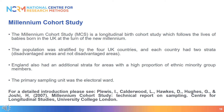For example, the Millennium Cohort Study is one of our valuable birth cohort study resources. This survey follows the lives of babies born in the UK between the years 2000 and 2002, and has a complex sample design. The population was stratified by the four UK countries, and each country had two strata: disadvantaged areas and not disadvantaged areas. England also had an additional stratum for areas with a high proportion of ethnic minority group members. The primary sampling unit was the electoral ward.